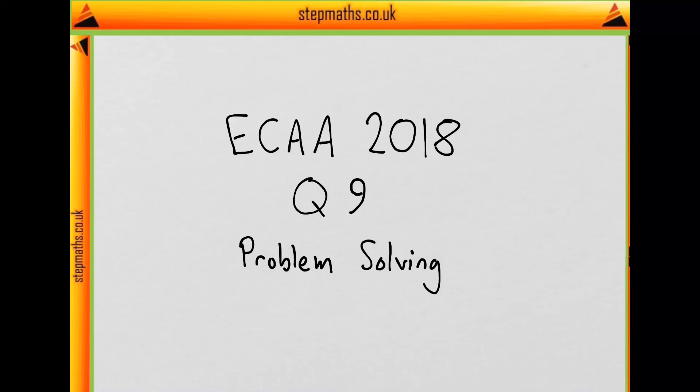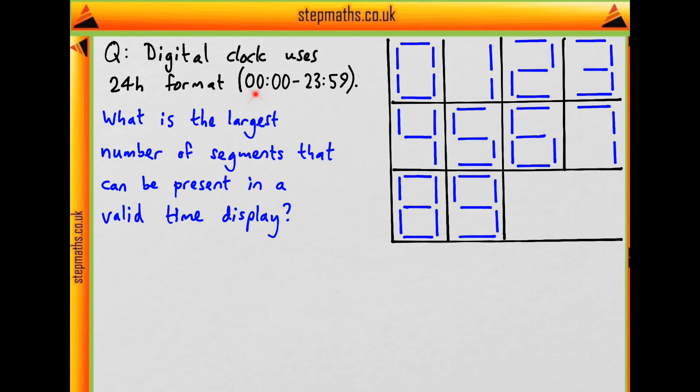This is question 9 on problem solving from the 2018 ECCA. A digital clock uses the 24-hour format, going from 0000 all the way to 2359, and uses these forms of digits with segments for making up the numbers. What is the largest number of segments that can be present in a valid time display?